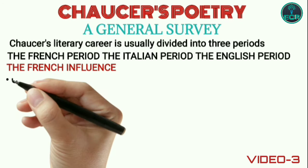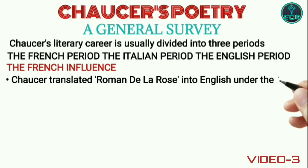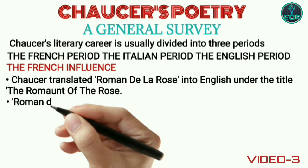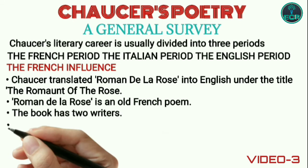Under the French influence, Chaucer partially translated Roman de la Rose into English under the title The Romaunt of the Rose. Roman de la Rose is an old French poem. The book has two writers.